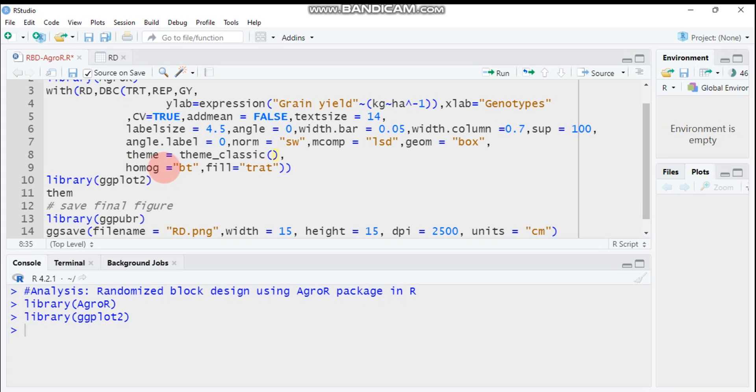Homoch equals BT means that you are going to check your homogeneity of variance using the Bartlett test. If you are not interested in the Bartlett test, you can convert from BT into Leven for checking your homogeneity of variance using the Leven test.